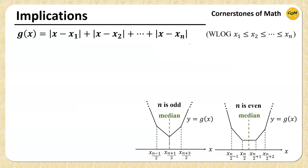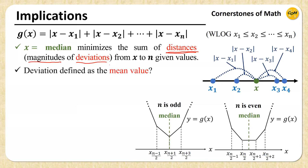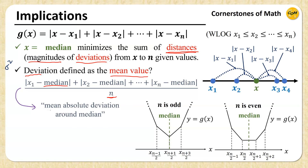It should now be clear that x as the median minimizes the sum of actual distances (magnitudes of deviations) from x to the n given values. We can also define a dispersion measure analogous to variance: the minimum value of g(x) — substituting x with the median — divided by n, representing the mean value of absolute deviations. This has the name mean absolute deviation around the median, and it is one of the measures of dispersion telling you how far the values are apart from the median.